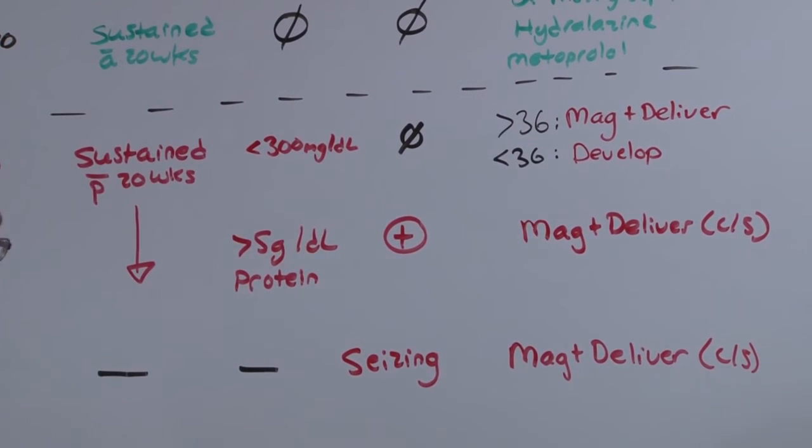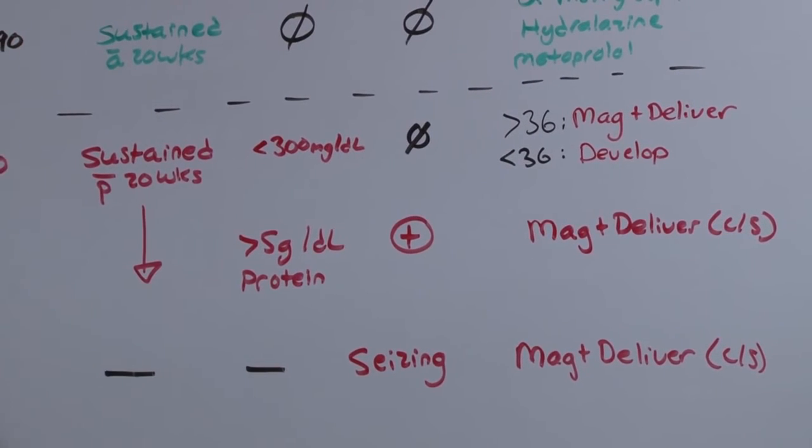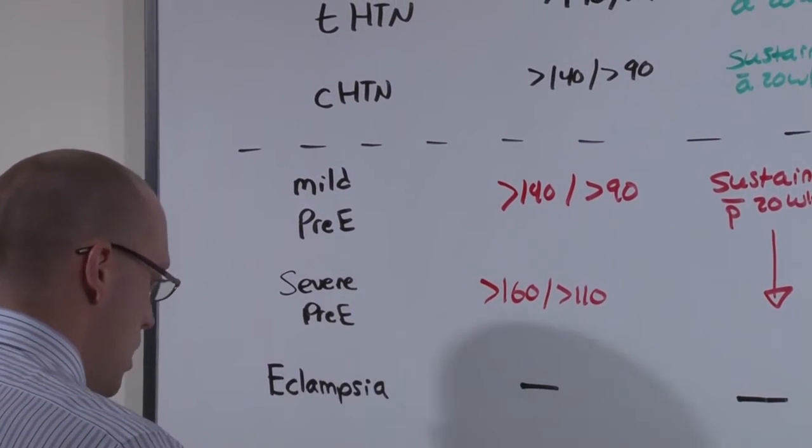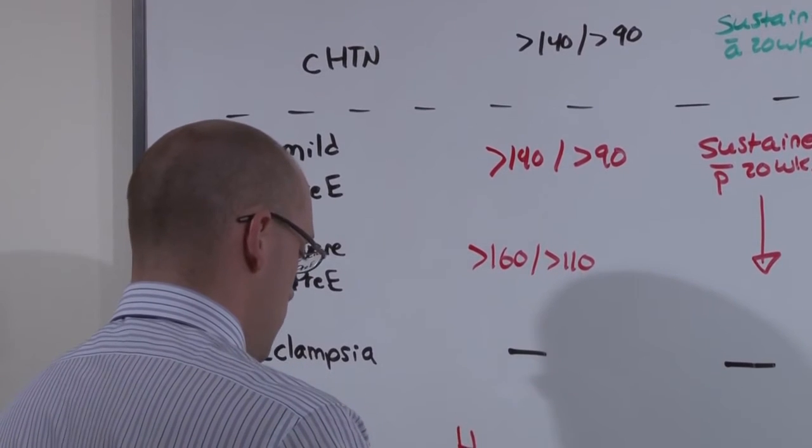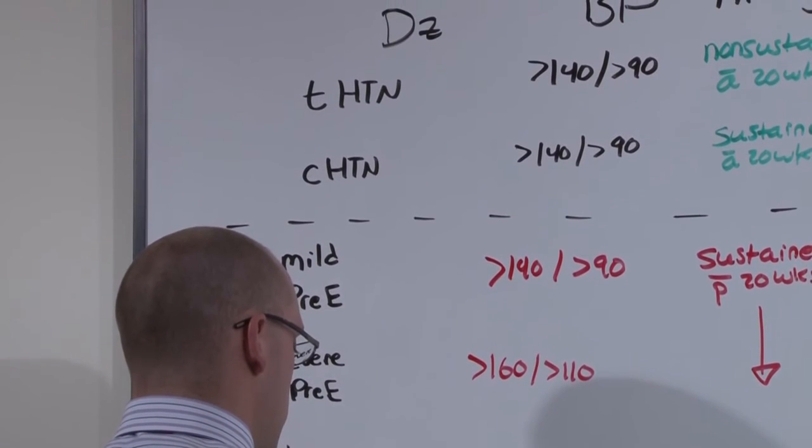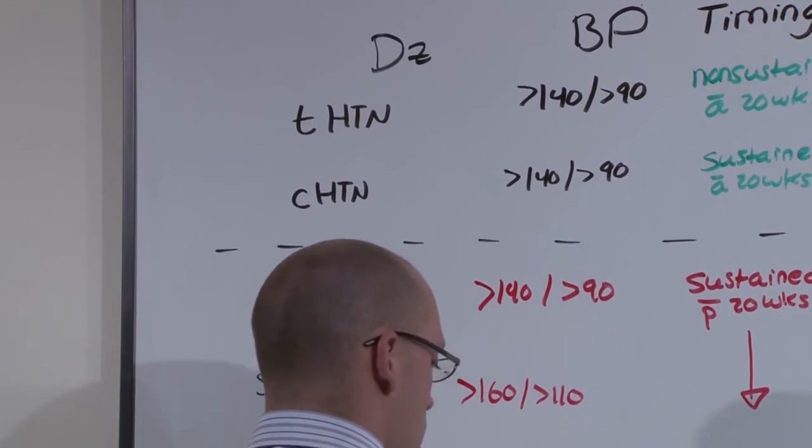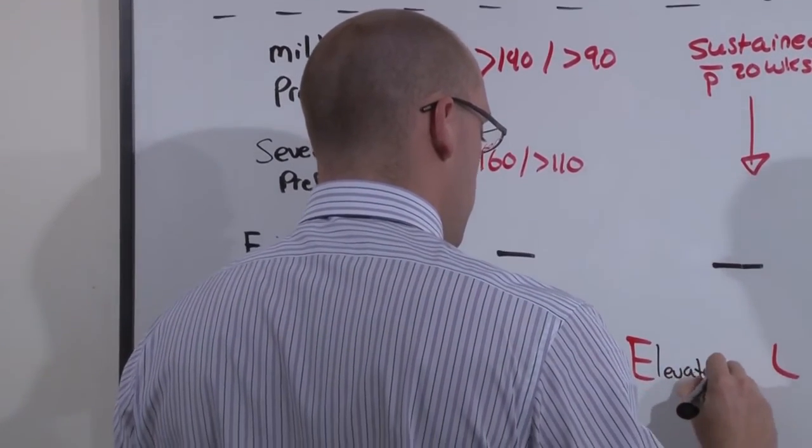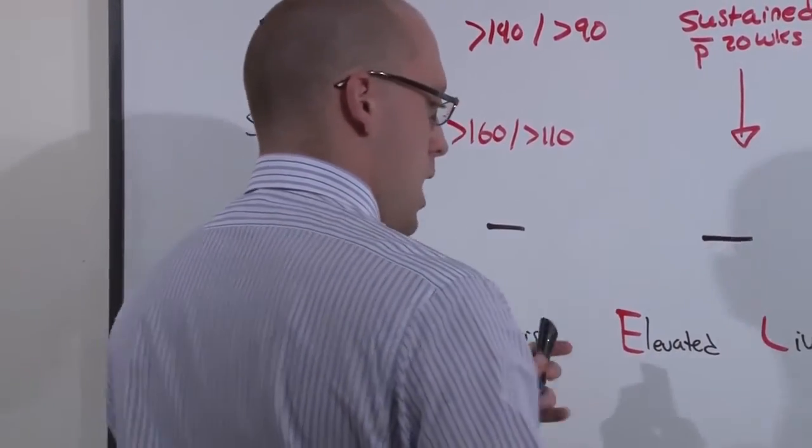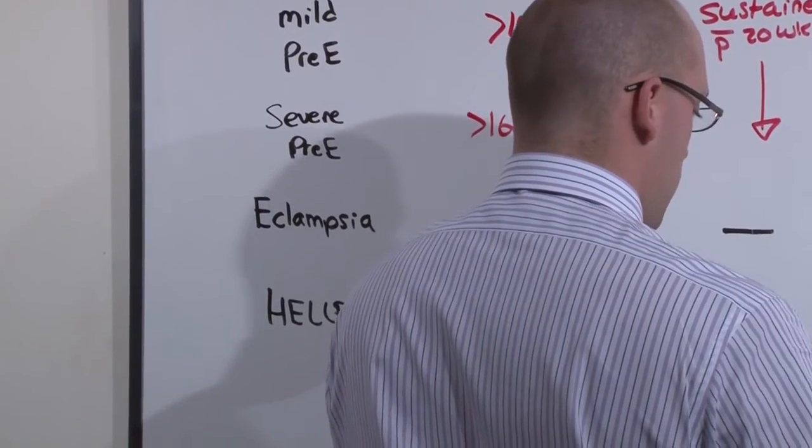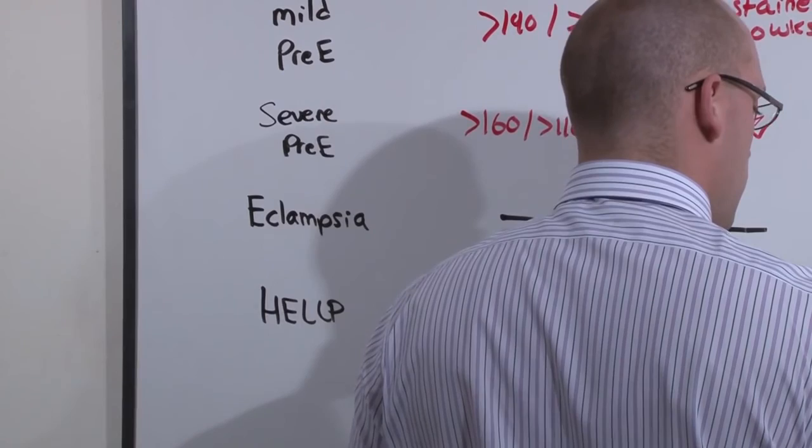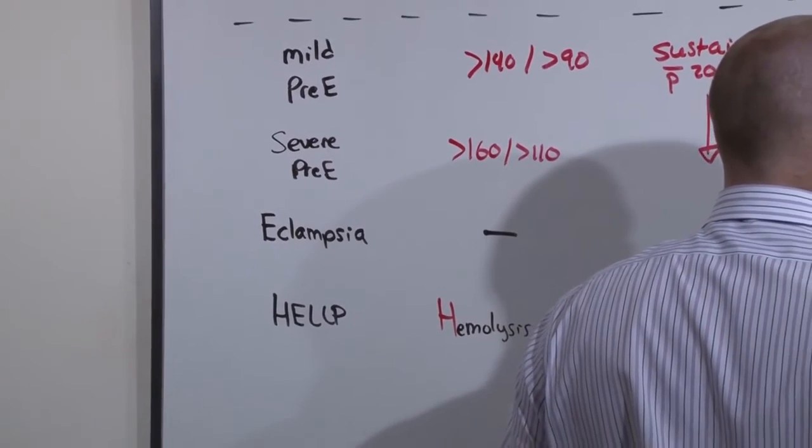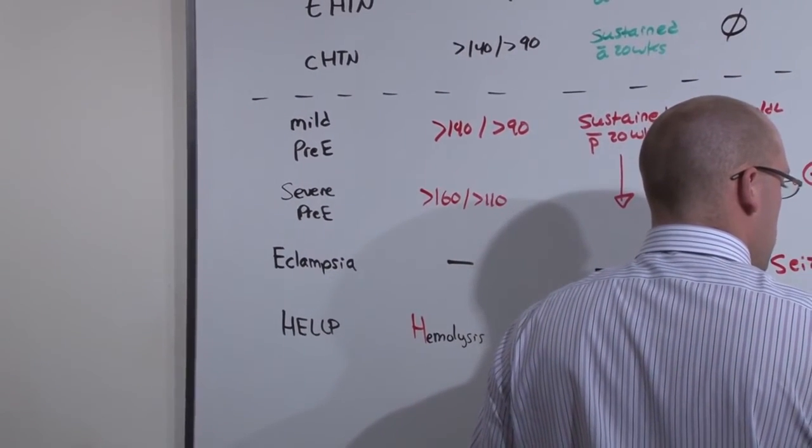Because it is tested against all these other diseases, I want to talk about HELP syndrome, as it presents just like eclampsia. HELP syndrome is hemolysis, elevated liver enzymes, and low platelets. The treatment for HELP syndrome is mag and deliver, generally by C-section.